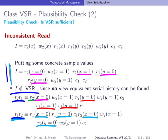And that's also good news, right? So it seems VSR is solving all of our problems. And for the inconsistent read, and for the plausibility check at least, and for the lost update, this seems to work out.